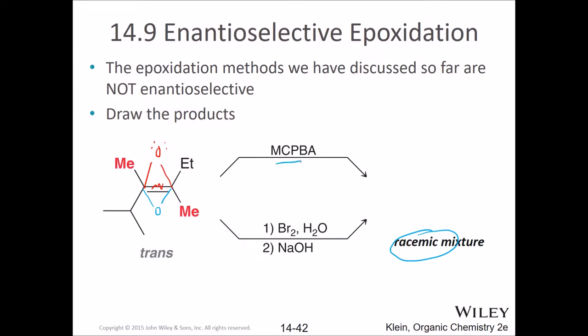We can do it two different ways: with MCPBA, or with bromine and water followed by hydroxide. Either way, it's powerful, but it's going to give us a racemic mixture. And if you were trying to make something for profit, you would not want a racemic mixture — you would want to make the thing you were trying to make and not get the stuff you weren't trying to make.